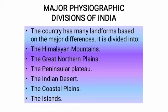Major Physiographic Divisions of India. The Himalayan peaks in the north, the beautiful beaches in the south, the great Indian Desert in the west, and the breathtaking natural heritage in the east make India a geographically vibrant, colorful, and truly incredible country. There is a varied nature of physiographic divisions in India, and based on major differences, the country is divided into five physiographic divisions.